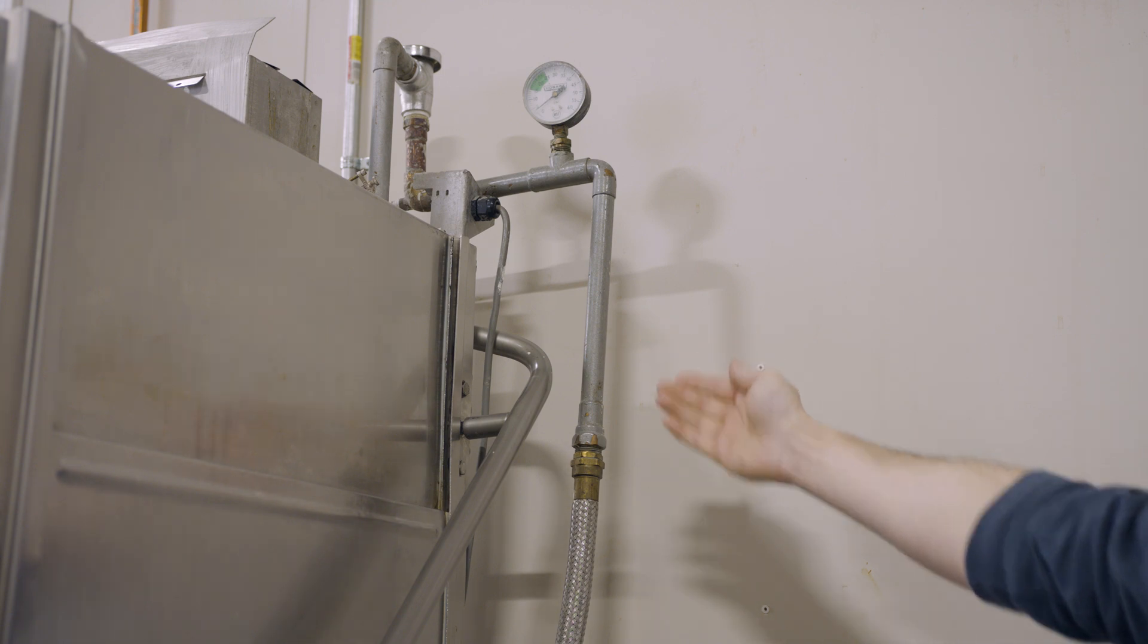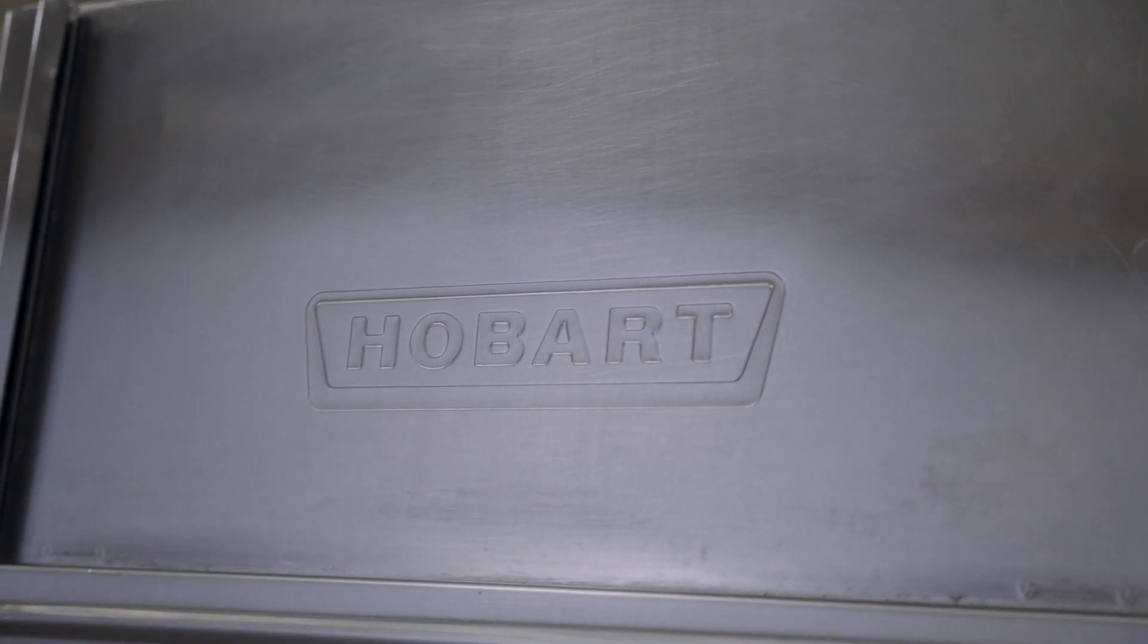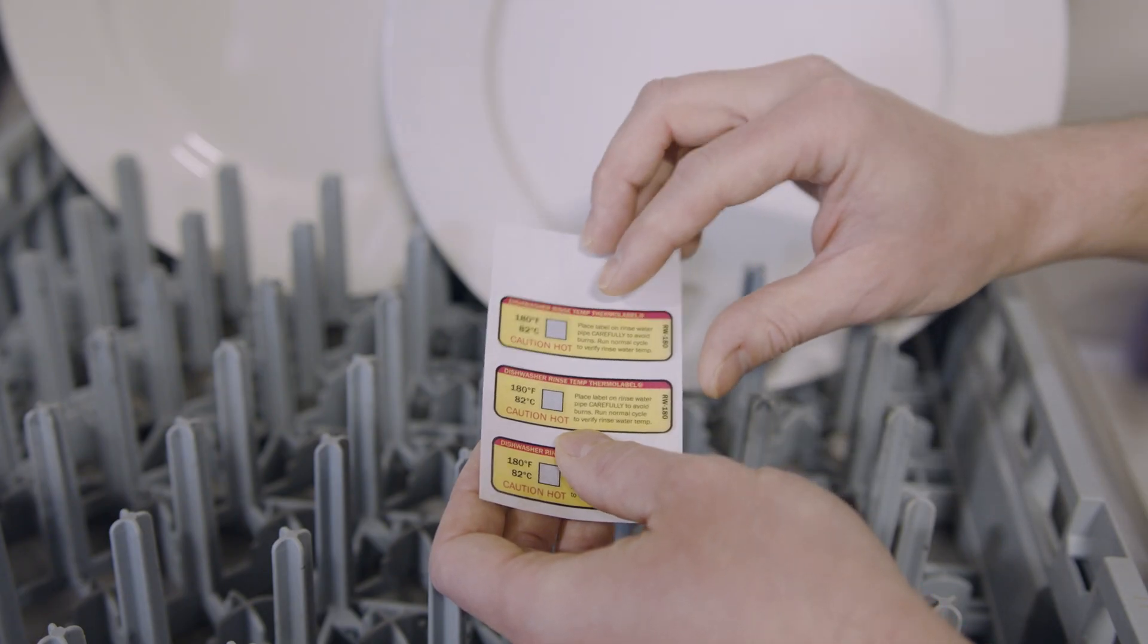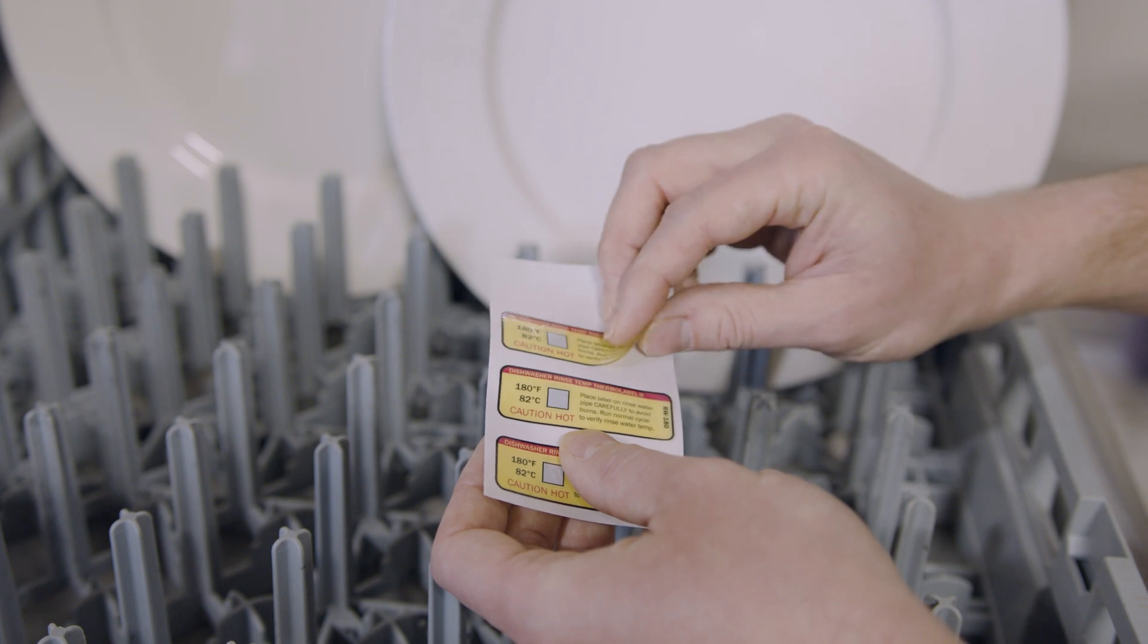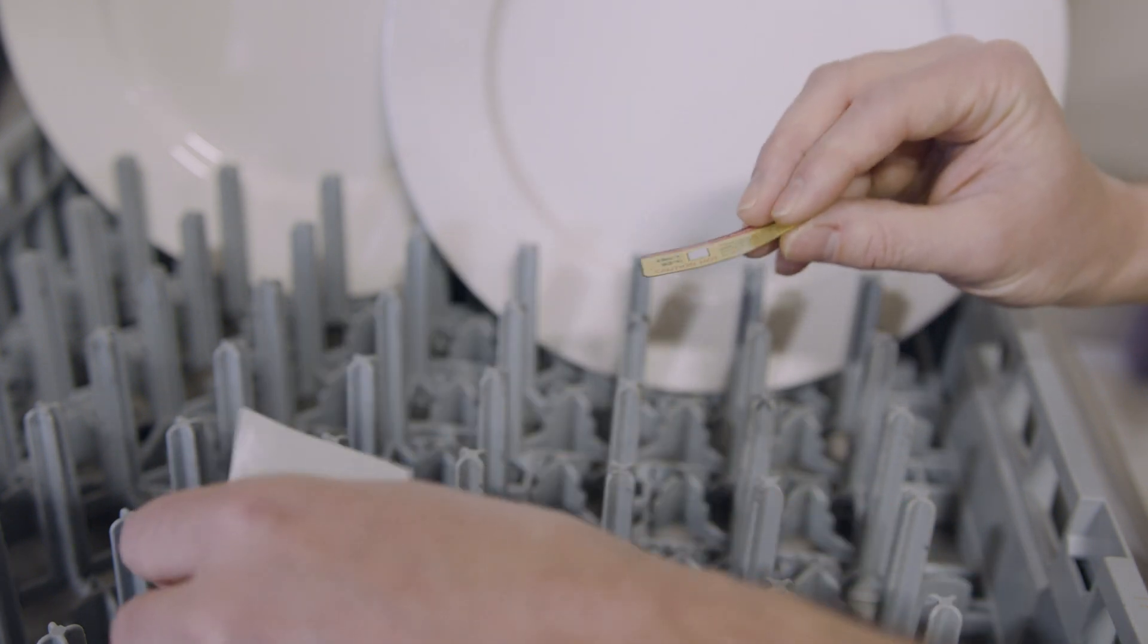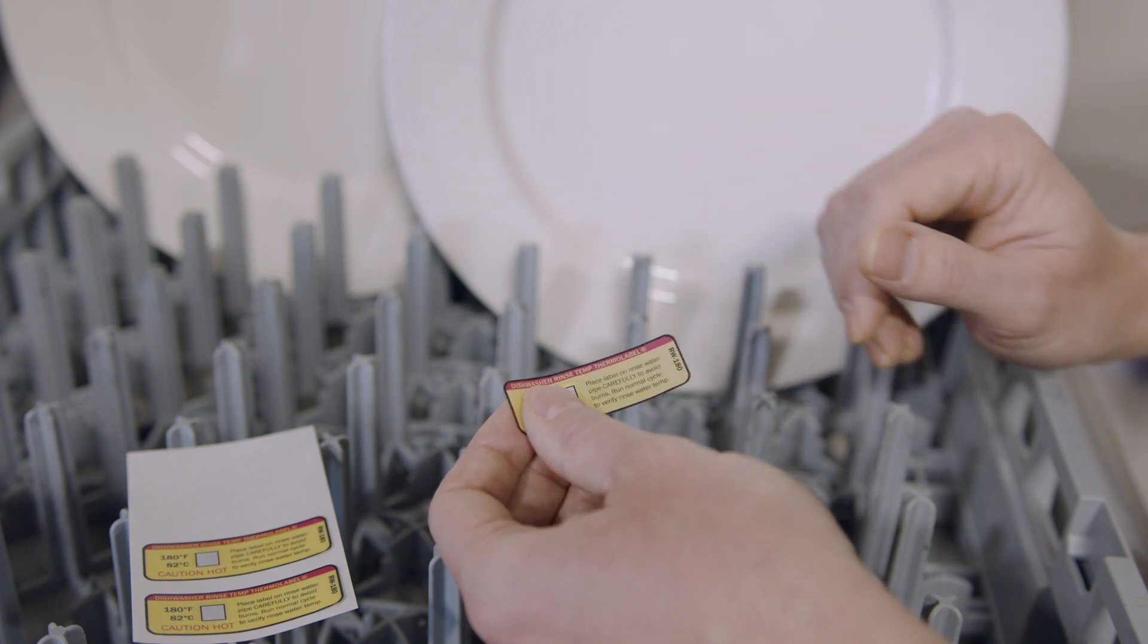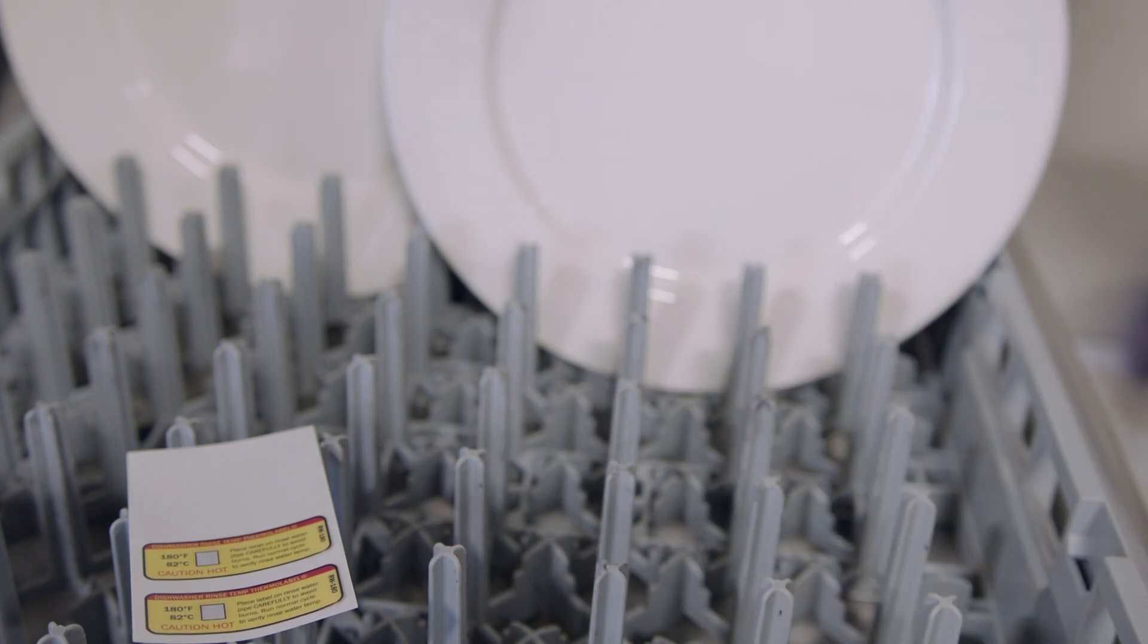For this demonstration, we have a Hobart Double Door Dishwasher with the rinse water pipe on the right side. Now we've removed the label from the sheet. You will notice that there is a non-adhesive section on one end of the label. This forms a tab to allow for safe and easy removal of the label after the test.